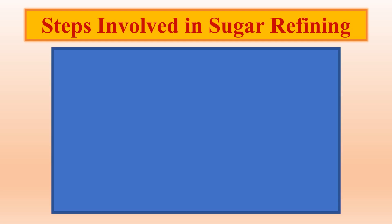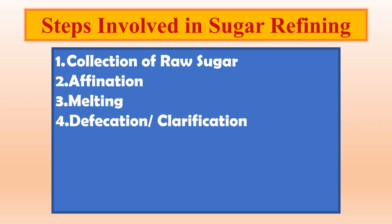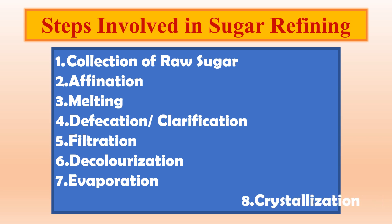In many sugar manufacturing industries, refining is done along with the sugar production process. But in some industries, it is completely done after sugar manufacturing. The steps involved in sugar refining are: collection of raw sugar, affination, melting, defecation or clarification, filtration, decolorization, evaporation, and crystallization.